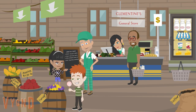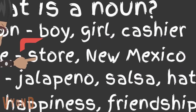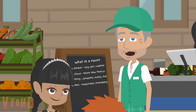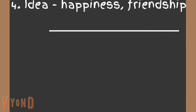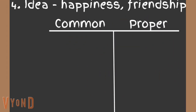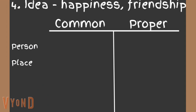Wow, that's so interesting. So why is New Mexico capitalized, but store isn't? Good question, Jessica. Remember I told you there are different types of nouns? To simplify, I'll make a T-chart. On the left, I'll put common, and on the right, I'll put proper. In the left column, I'll write the categories of person, place, thing, and idea.